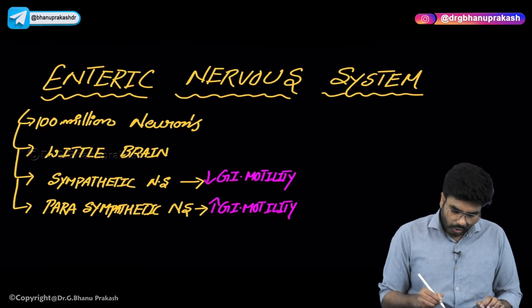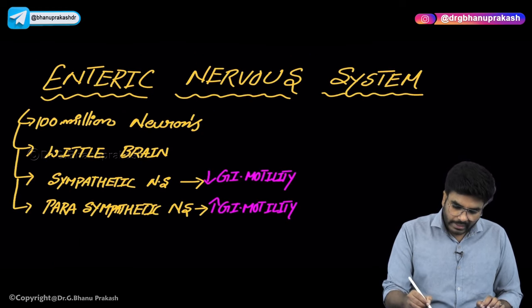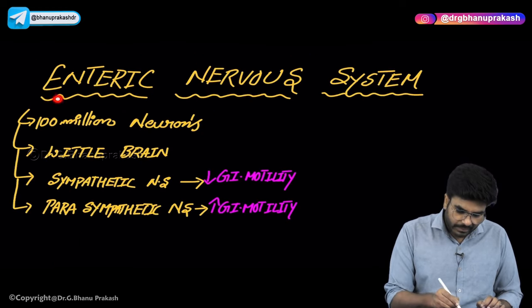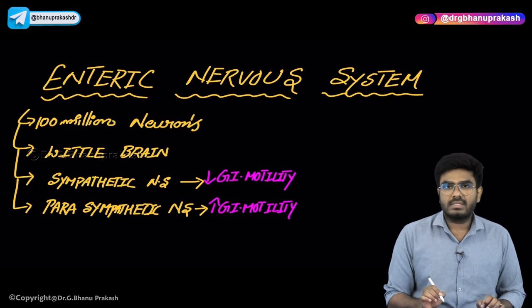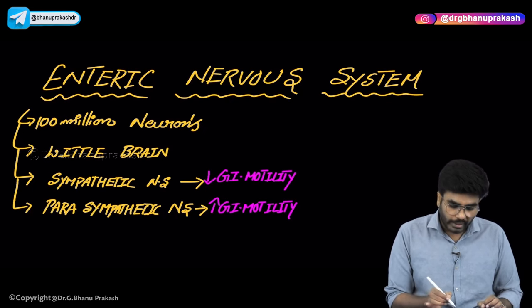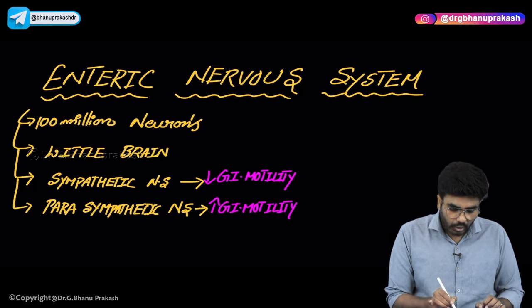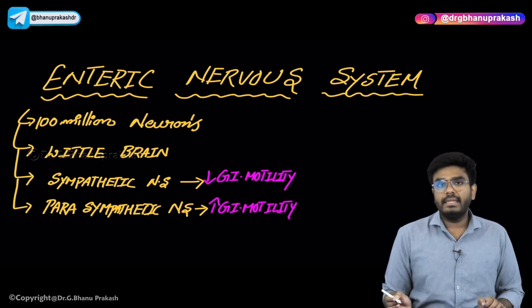So some basic integrations with pathology. Now, the enteric nervous system has almost 100 million neurons. As it has so many neurons, we are calling it the 'little brain'.